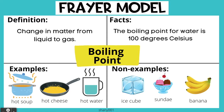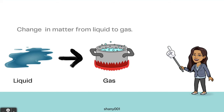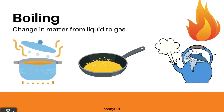Boiling point. Definition: change in matter from liquid to gas. Facts: the boiling point for water is 100 degrees Celsius. Examples: hot soup, hot cheese, hot water. Non-examples: ice cube, sundae, banana.